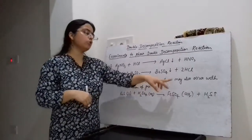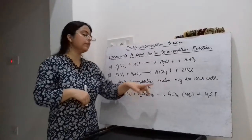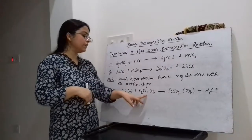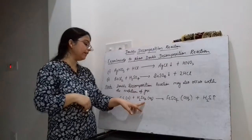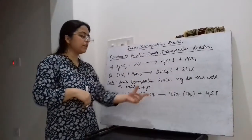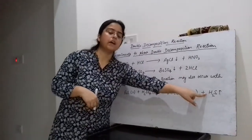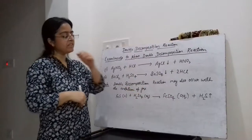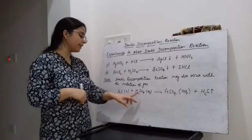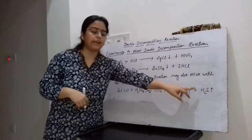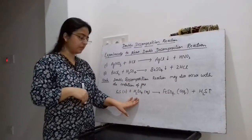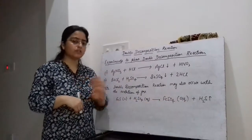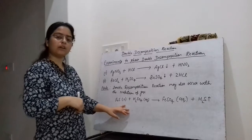Double decomposition reaction may also occur with the evolution of a gas as one of the products. When iron sulphide reacts with dilute sulphuric acid — iron sulphide is solid and dilute sulphuric acid is added — ferrous sulphate solution is formed and hydrogen sulphide gas with the smell of rotten eggs is evolved. Mutual exchange of radicals takes place forming ferrous sulphate and hydrogen sulphide, making it a double decomposition reaction but not a precipitation reaction since no precipitate is formed.